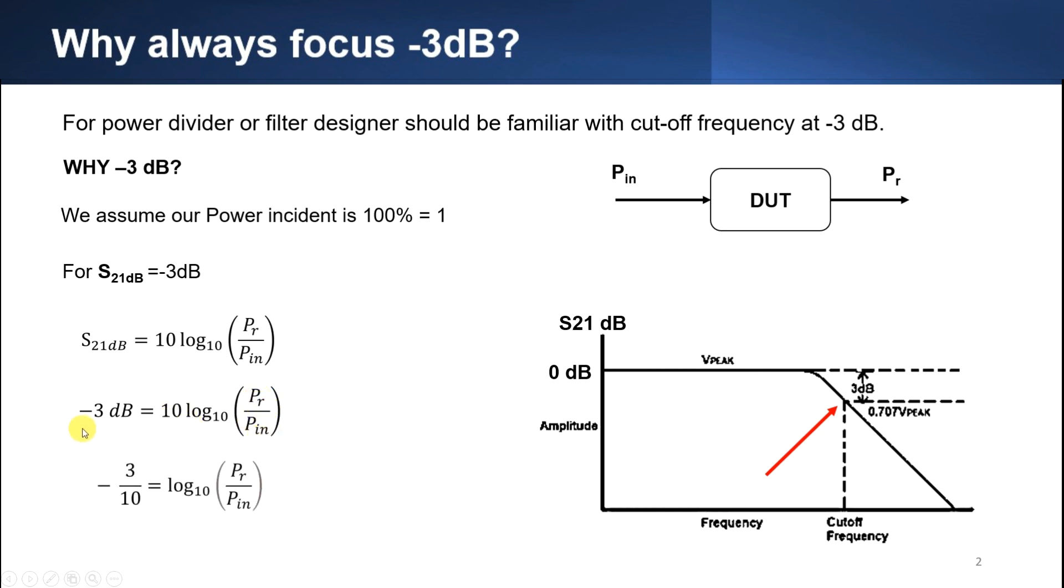Then we just divide with 10 here, put it down and 10 power of negative 3 over 10 to remove the log here and then power received, divided by power input is equal to 0.5 after you calculate and then you will get the power received equal to 0.5 times with power input. Our power input is 1, that means it's in percent, we will times with 100%, we will get 50%. So our power received is 50% when our S21dB is equal to negative 3dB.